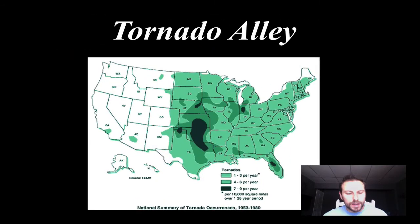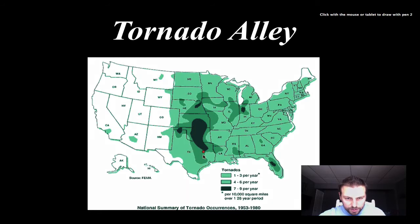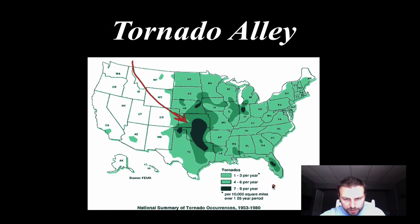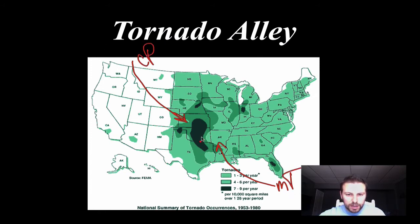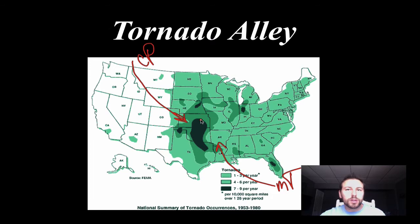This region is known as Tornado Alley — this section of the United States where we have continental polar air moving down from Canada colliding with maritime tropical air from the Gulf of Mexico. Because we always have this constant collision of these two extremely different air masses, conditions here lend themselves to tornado formation.